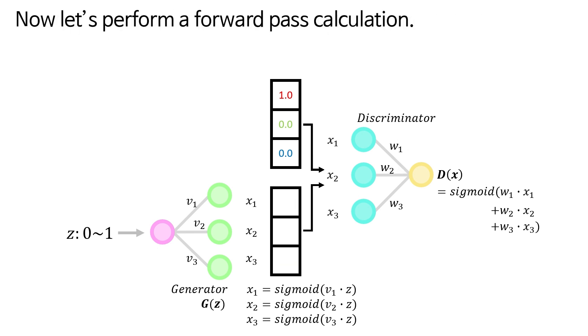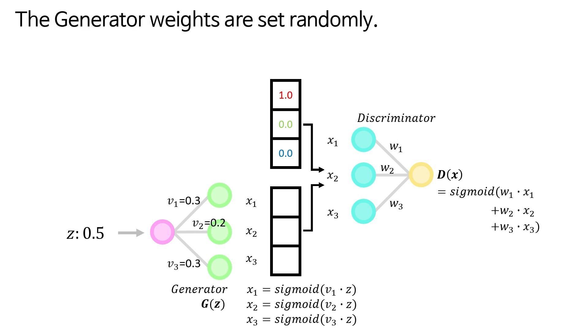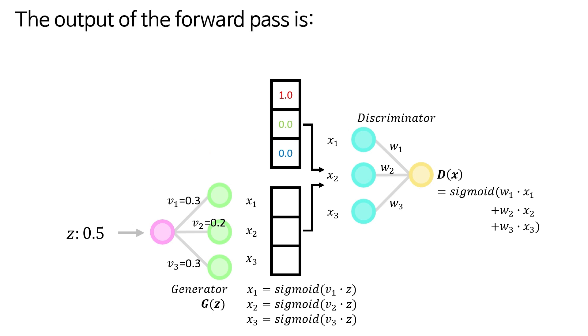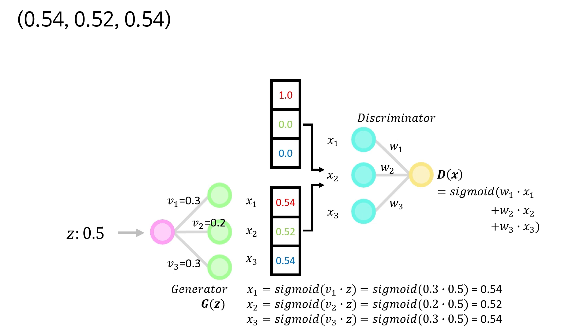Now let's perform a forward pass calculation. Let's set the input Z to 0.5. The generator weights are set randomly. For simplicity, we omit bias. The output of the forward pass is like these values.